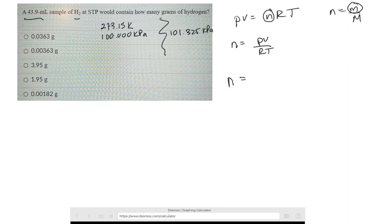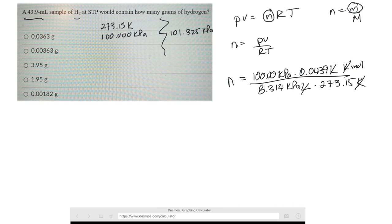So the pressure, let's use 100 kilopascals, times the volume, 0.0439 liters, divided by 8.314 kilopascals liters per Kelvin mole, and our temperature is 273.15 Kelvin. So the Kelvins cancel, liters cancel. Where's my kilopascals? Oh, kilopascals cancel.